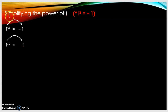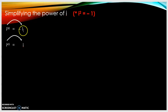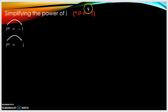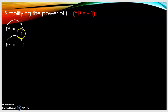Now we look at simplifying the power of i, or how to reduce the power of i from a higher index to the value of i. Remember, i squared is equal to negative 1. In this video we will learn how to convert i to the power of 30 into negative 1, or i to the power of 45 into i.